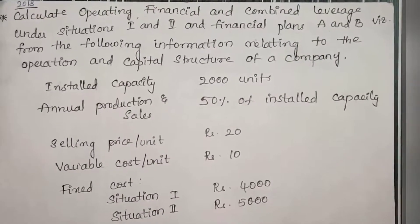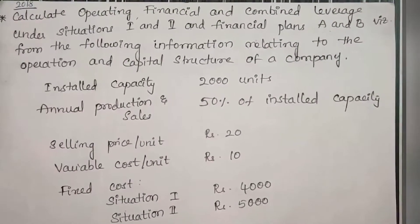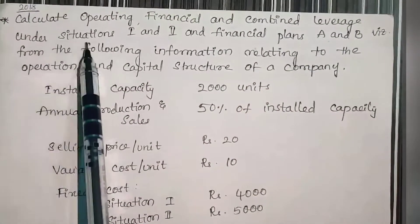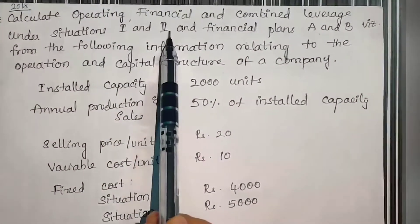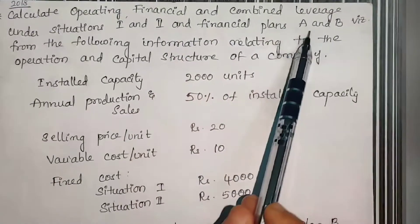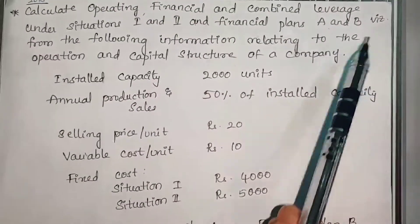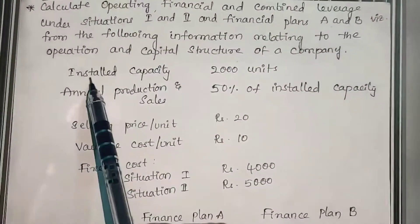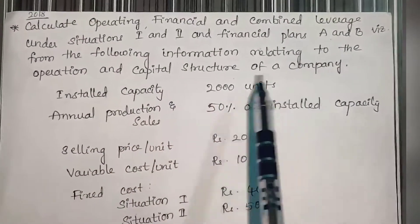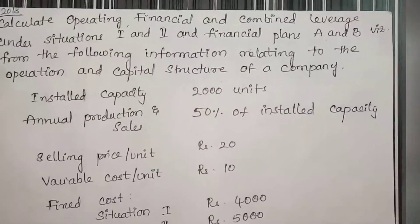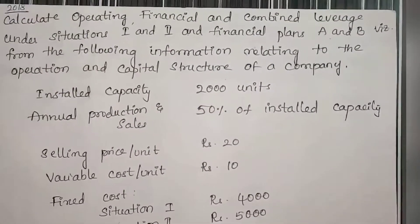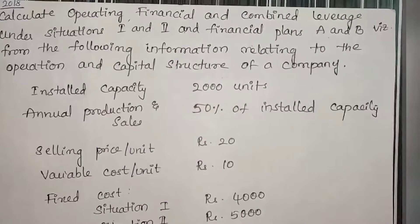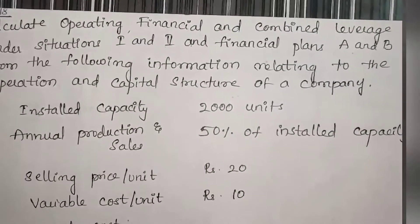Let's go with the problem. Calculate operating, financial and combined leverage under situation 1 and 2, and financial plans A and B respectively, from the following information relating to the operation and capital structure of a company. The company has two different financial plans, and we are supposed to calculate operating, financial and combined leverage.